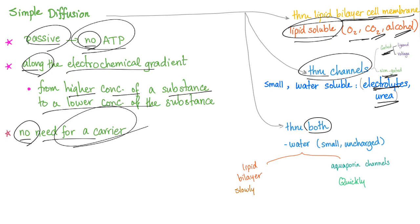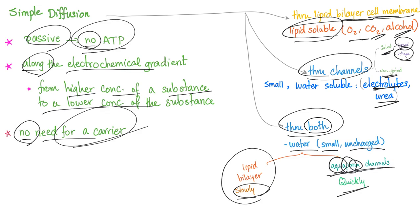Two types of channels: gated and non-gated. If you are gated, you can open by a ligand or by electricity, or through both. If you are water, you get to rule. You are king. Why is water king? Because it's small and uncharged. It can pass through the lipid bilayer itself slowly, or through the aquaporin channels very quickly. Aquaporin: in means protein, pore means like a pore, and aqua means water.